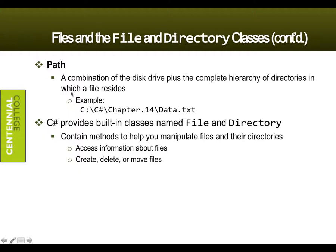We need to talk about the path to the file. Your main drive is usually C on most systems — this is where your operating system is stored. You can also have paths to a D drive, E drive, F drive, or a network drive. We have two built-in classes named File and Directory. With those classes we can access information about files, check if they exist, and create, delete, and move files.